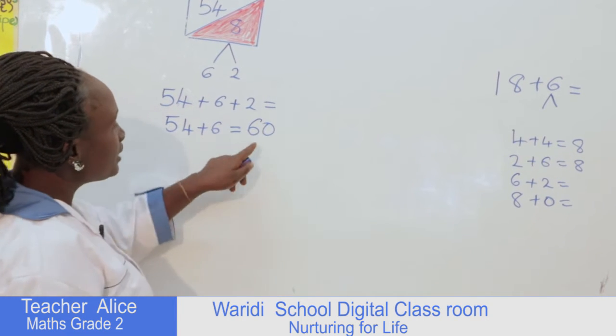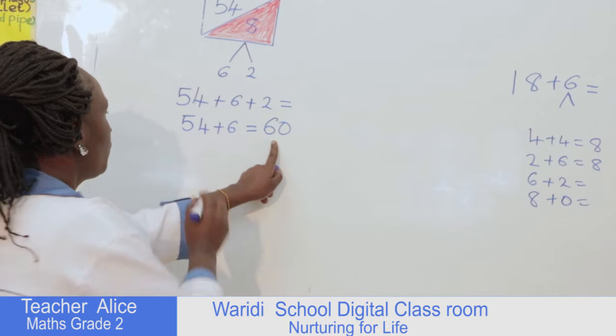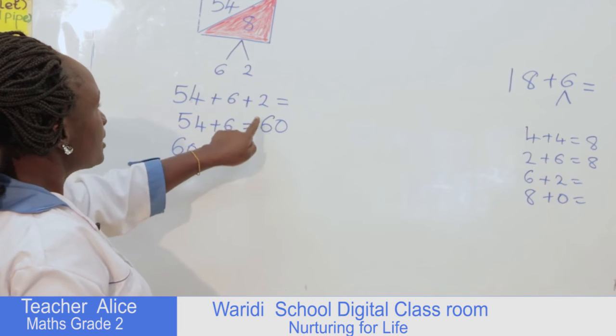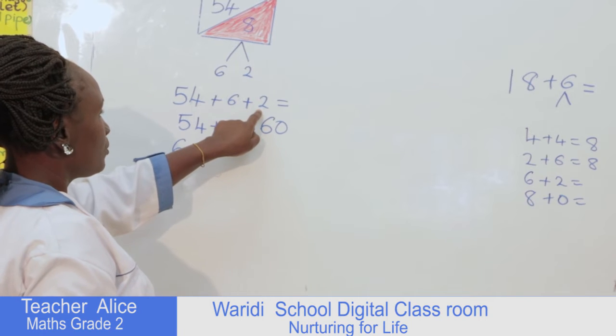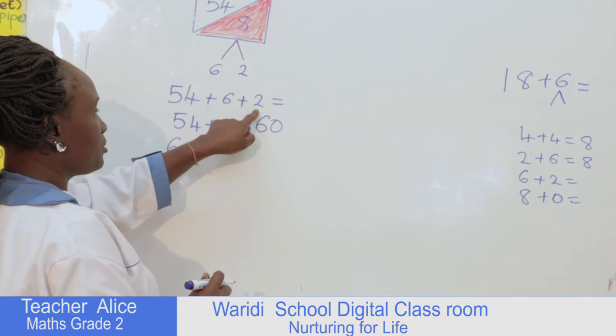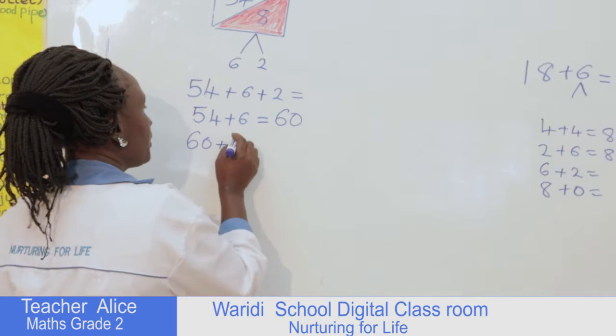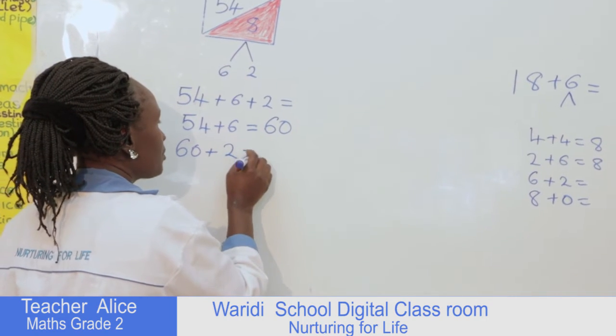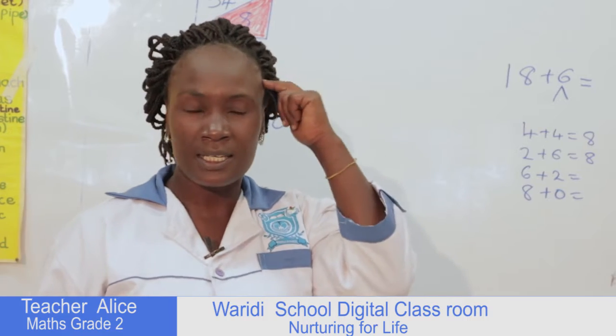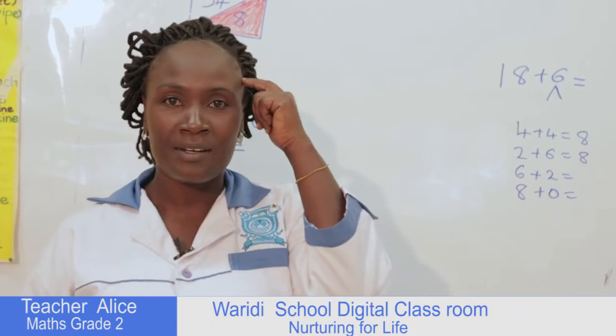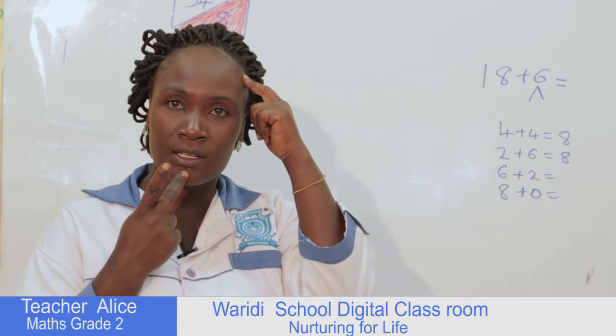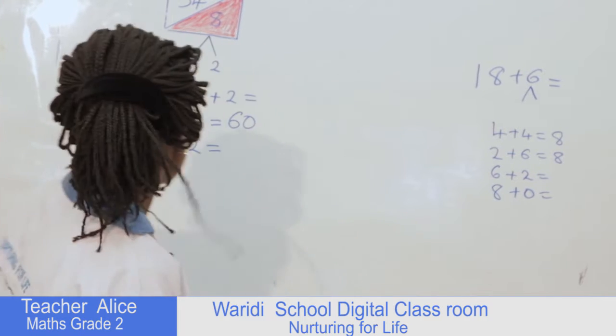Then after that we'll take this 60, we'll write it down here plus we take our 2, this is our 2, remember we had used 6 so we are using the second number that we had broken which is 2. Then we write 2 here equals. Then we start, we still count using our body parts: 60 in my head, two fingers, 60, 61, 62. So our answer is going to be 62.